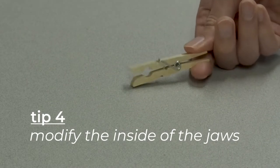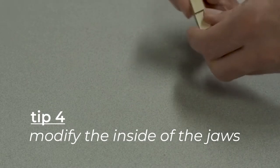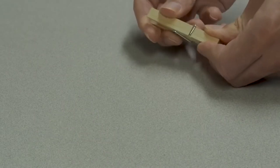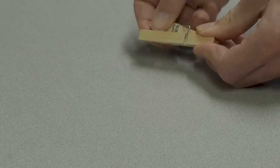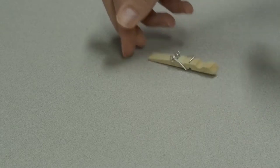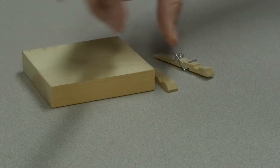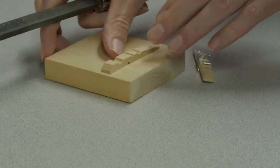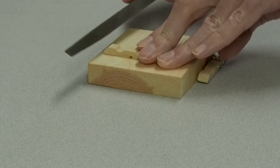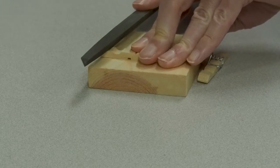Tip four: modify the inside of the jaws. Similar to the pin vise, I'm going to modify the inside of the jaws. Clothespins are easily taken apart, disassembleable.